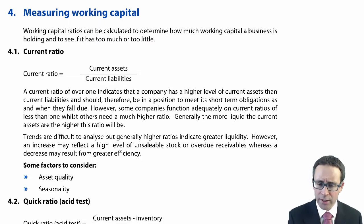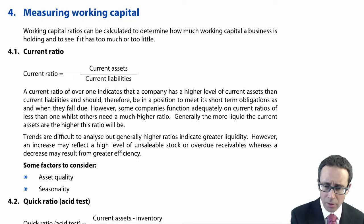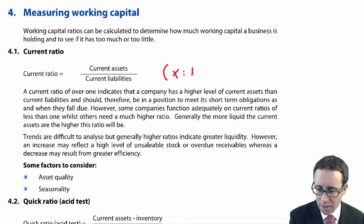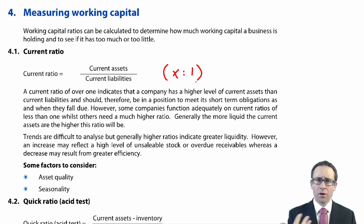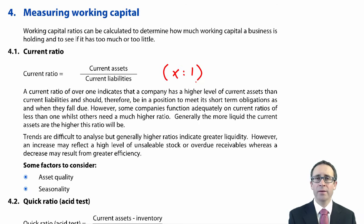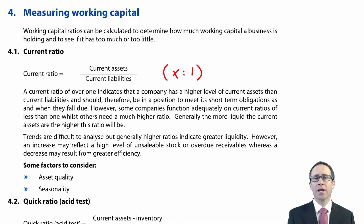The current ratio is a nice and simple ratio to calculate. It measures the number of times — expressed as X to one — that current assets cover current liabilities. Current assets include inventory, receivables, and cash. Current liabilities include trade payables, interest payables, dividend payables, and tax payables. You would like to have an excess of current assets over current liabilities, so in an ideal world it should be greater than one.